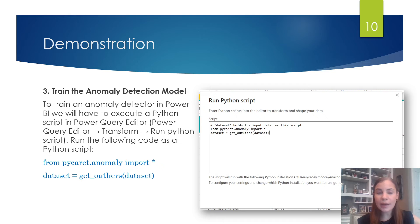Next, we are ready to train the anomaly detection model. In order to do this, we will execute a Python script in Power Query Editor. So we'll launch Power Query Editor, which is Microsoft's tool for transforming data within Microsoft Power BI. And then from there, there is a button to run a Python script. And we'll go ahead and enter the Python script that will build an anomaly detector.